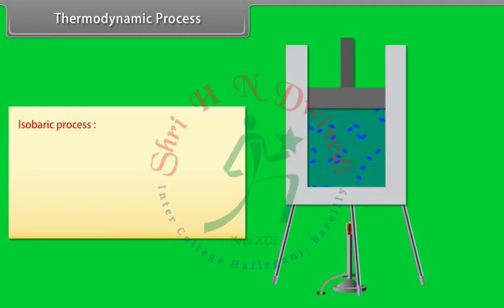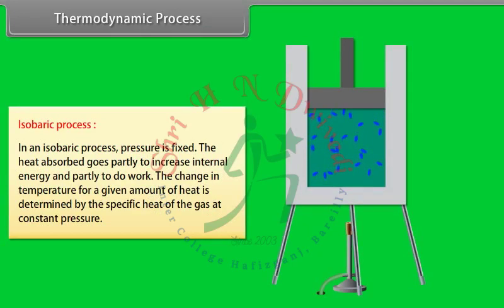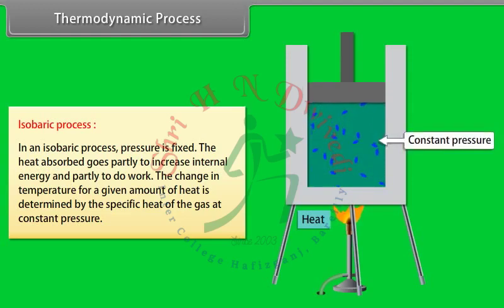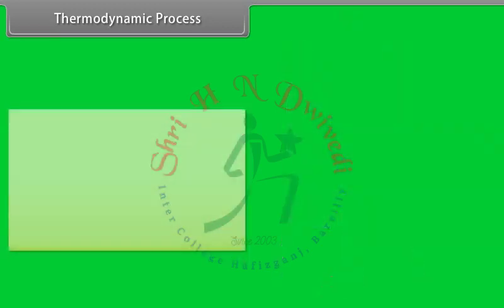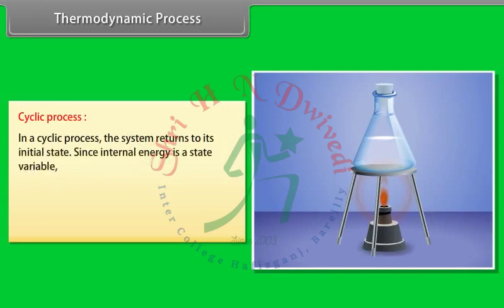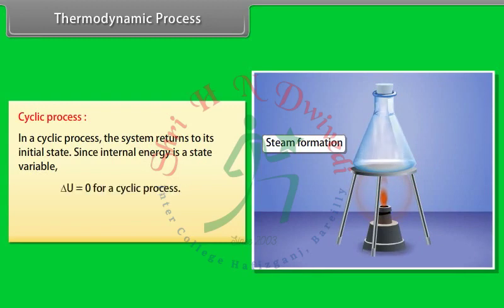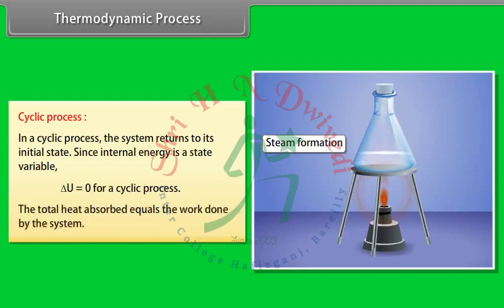In an isobaric process, pressure is fixed. The heat absorbed goes partly to increase internal energy and partly to do work. The change in temperature for a given amount of heat is determined by the specific heat at constant pressure. In a cyclic process, the system returns to its initial state. Since internal energy is a state variable, ΔU = 0 for a cyclic process, and the total heat absorbed equals the work done by the system.